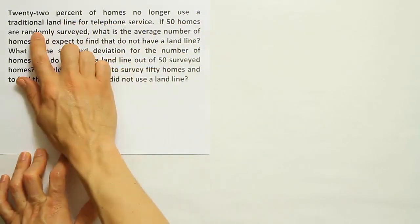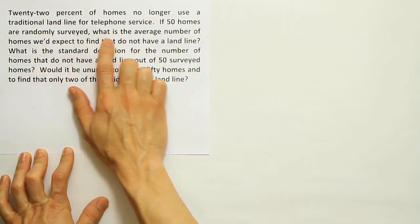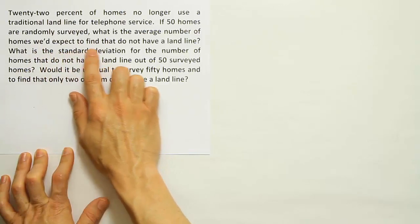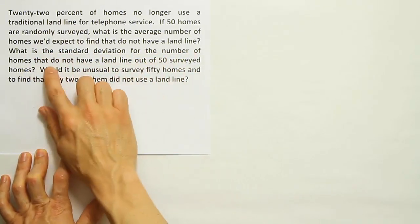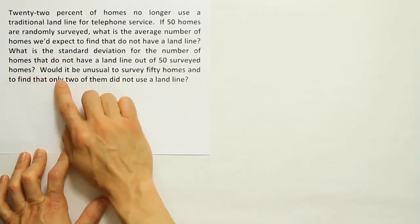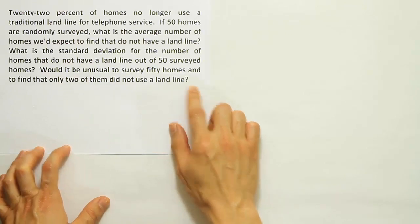22% of homes no longer use a traditional landline for telephone service. If 50 homes are randomly surveyed, what is the average number of homes we'd expect to find that do not have a landline? What is the standard deviation for the number of homes that do not have a landline out of 50 surveyed homes? Would it be unusual to survey 50 homes and find that only two of them did not use a landline?